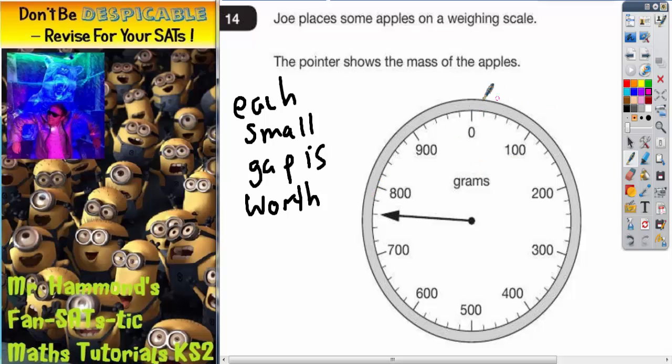Now when we go from 0 to 100, that obviously is a gap of 100. But there are five little mini gaps. One, two, three, four, five. So if you split 100 into five little mini gaps, you're going to get 20 in each gap. So each little mini gap is worth 20.